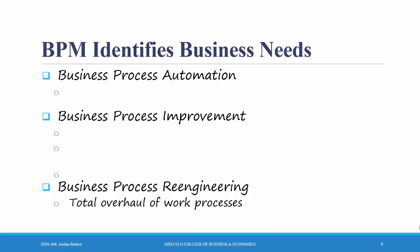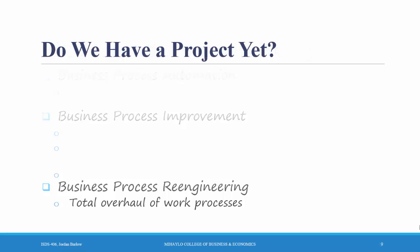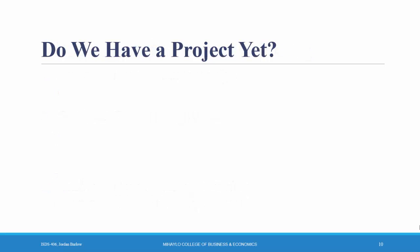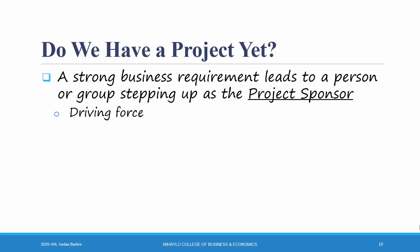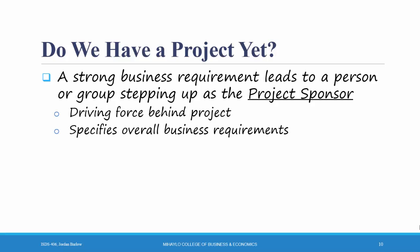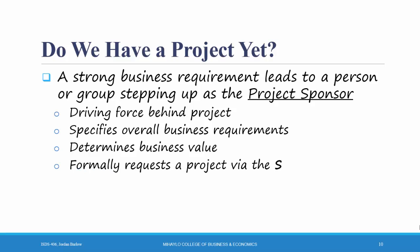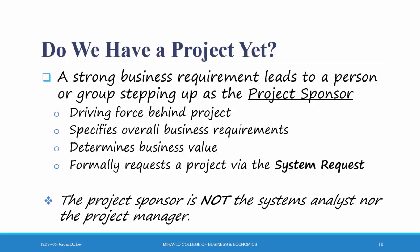Any of these three tools — business process automation, improvement, or reengineering — could lead to significant IS projects being started. Once you see a strong business need or requirement, which may or may not be based in business process management, you need someone to step up as a project sponsor. The project sponsor is the driving force behind a project. They specify the overall business requirements, determine the overall business value, and formally request the project via a document called the system request. Don't get confused: the project sponsor is not the systems analyst nor the project manager. They are not in charge of the project, just the one who sees the business need and is heavily involved to make sure the project succeeds.